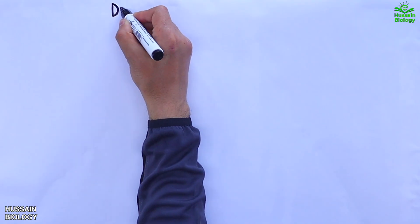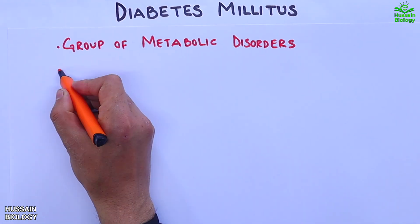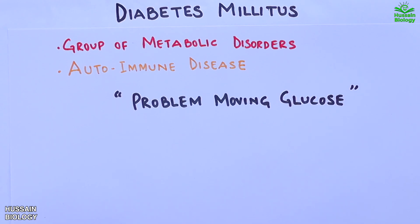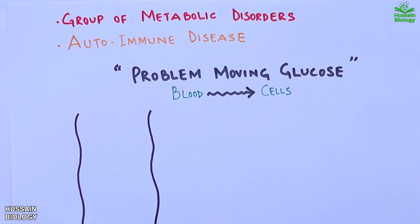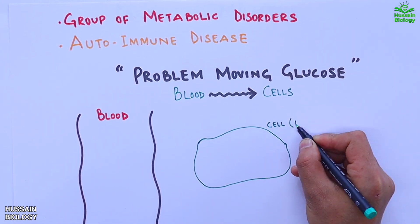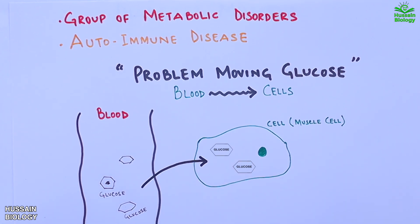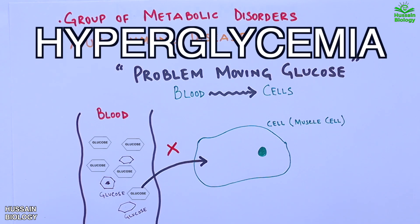In this video we'll be discussing diabetes mellitus, which is a group of metabolic disorders or an autoimmune disease where we have higher blood glucose levels. Glucose in the blood is transported to cells for the generation of ATP. In this diagram we can see a blood vessel on the left and a muscle cell on the right. The glucose molecules are transported to cells to derive energy, but when we have diabetes mellitus this transport is halted, glucose accumulates in the blood, and we get hyperglycemia.